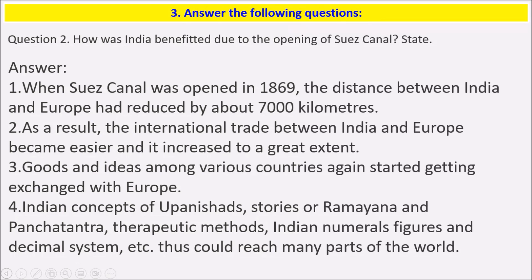Question 2: How was India benefited due to the opening of the Suez Canal? When the Suez Canal was opened in 1869, the distance between India and Europe was reduced by about 7,000 kilometers. As a result, international trade between India and Europe became easier and increased to a great extent. Goods and ideas among various countries again started getting exchanged with Europe. Indian concepts of the Upanishads, stories of the Ramayana and Panchatantra, therapeutic methods, Indian numeral figures, and the decimal system could reach many parts of the world.